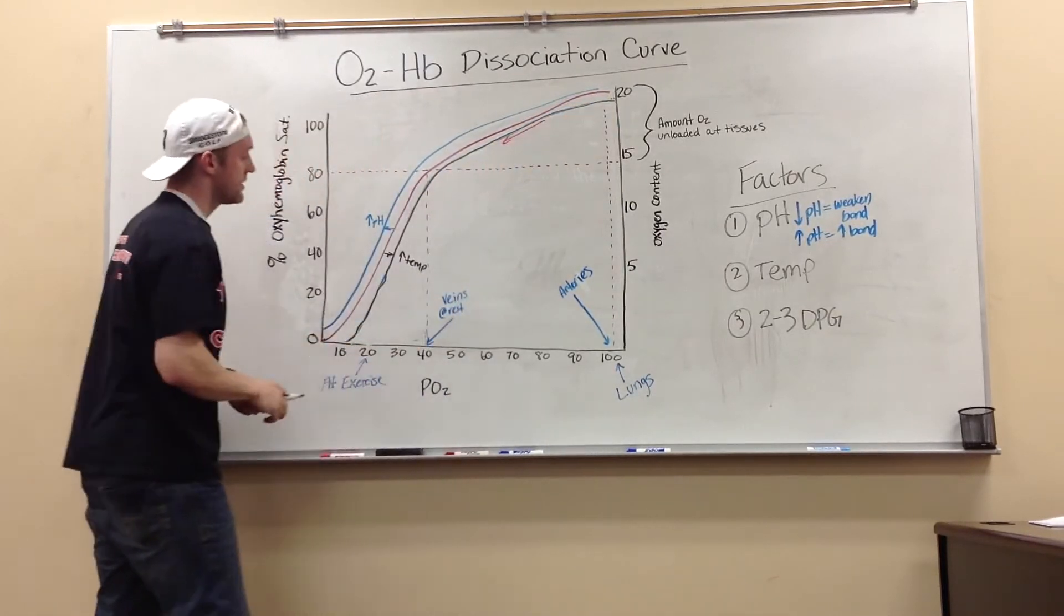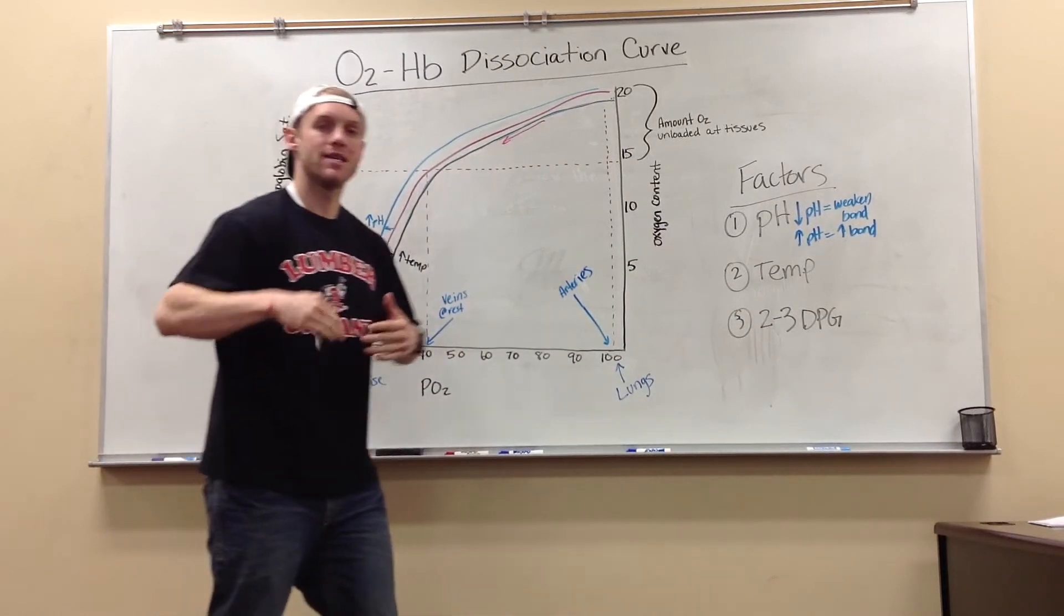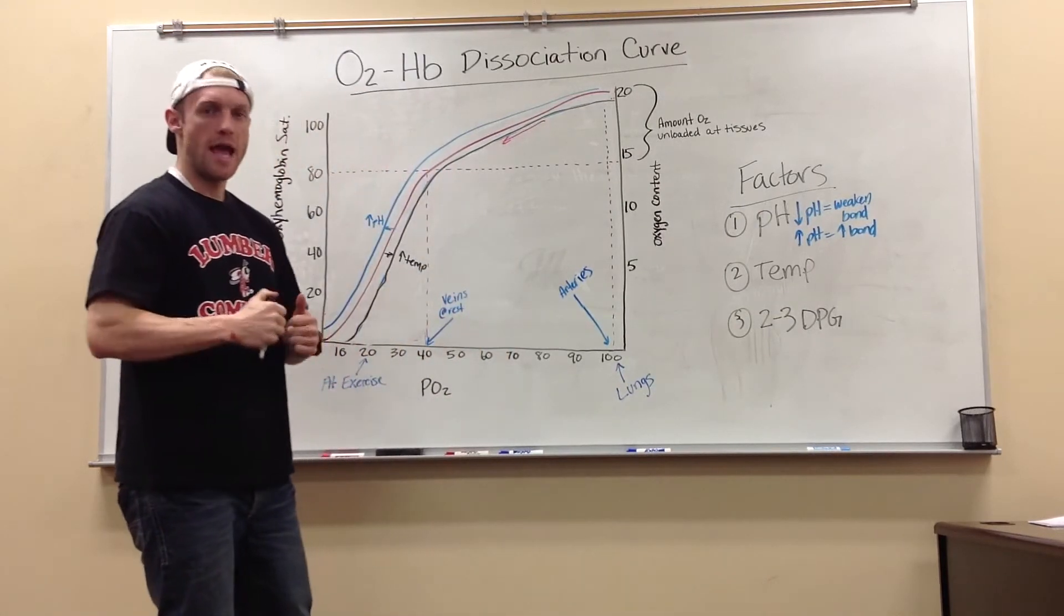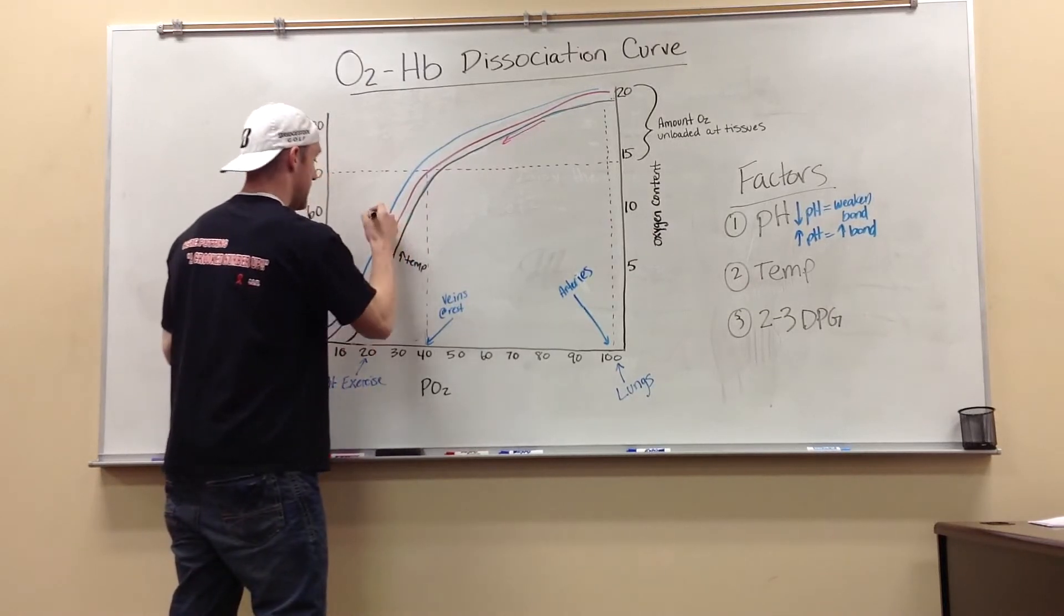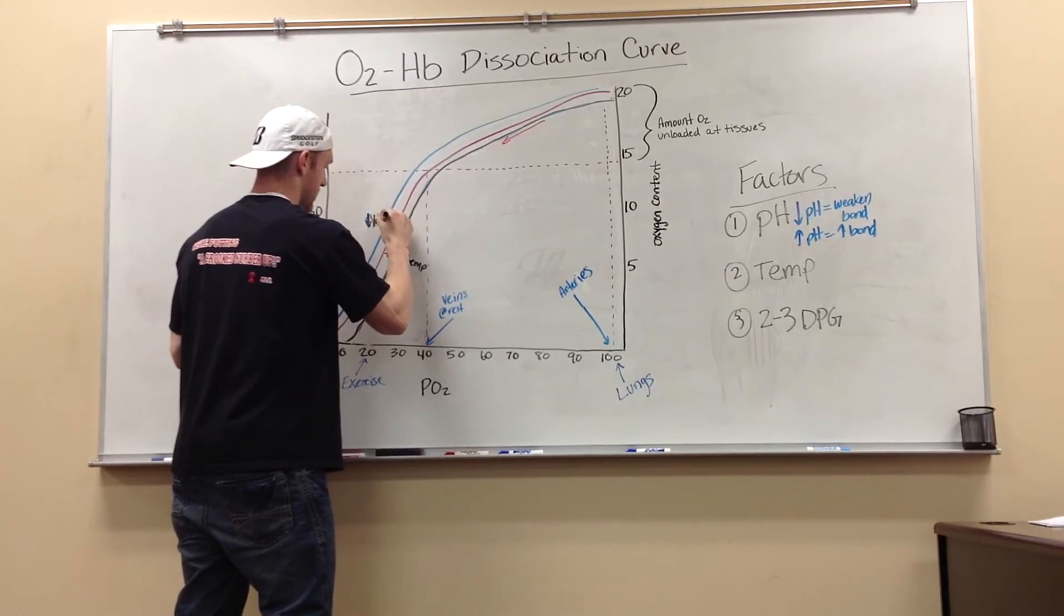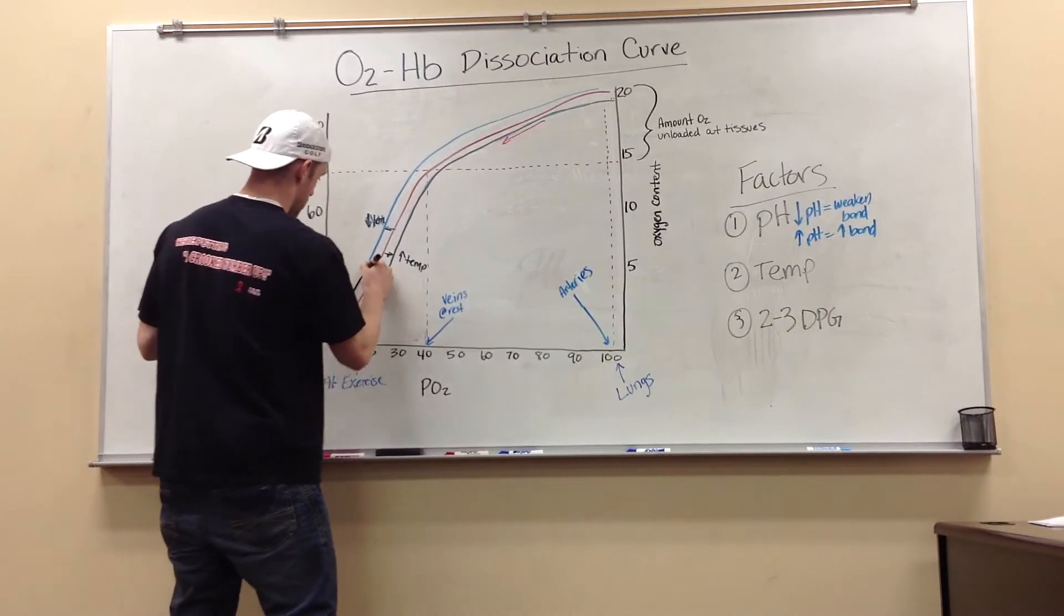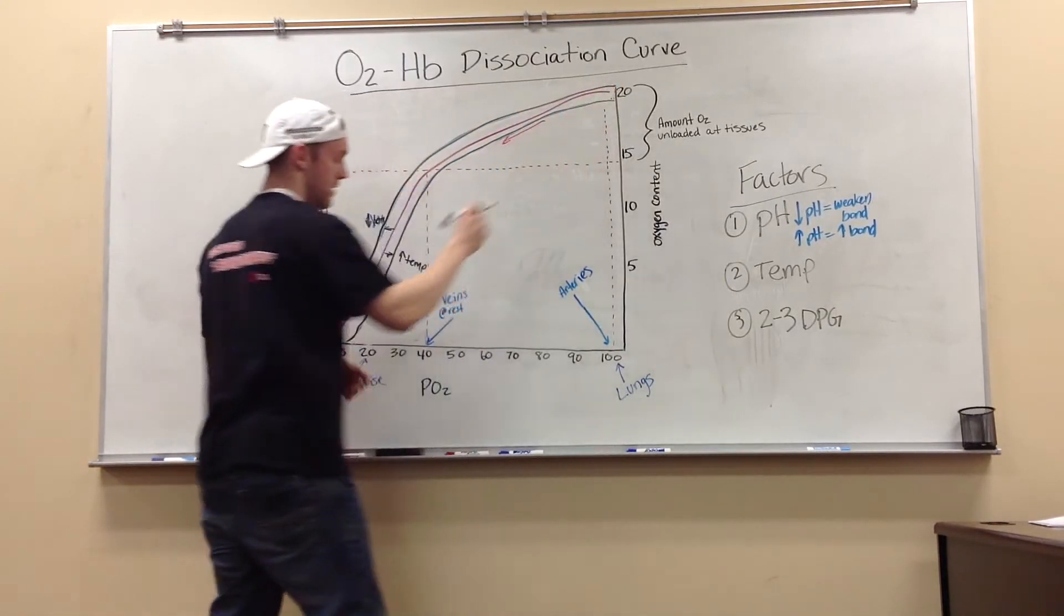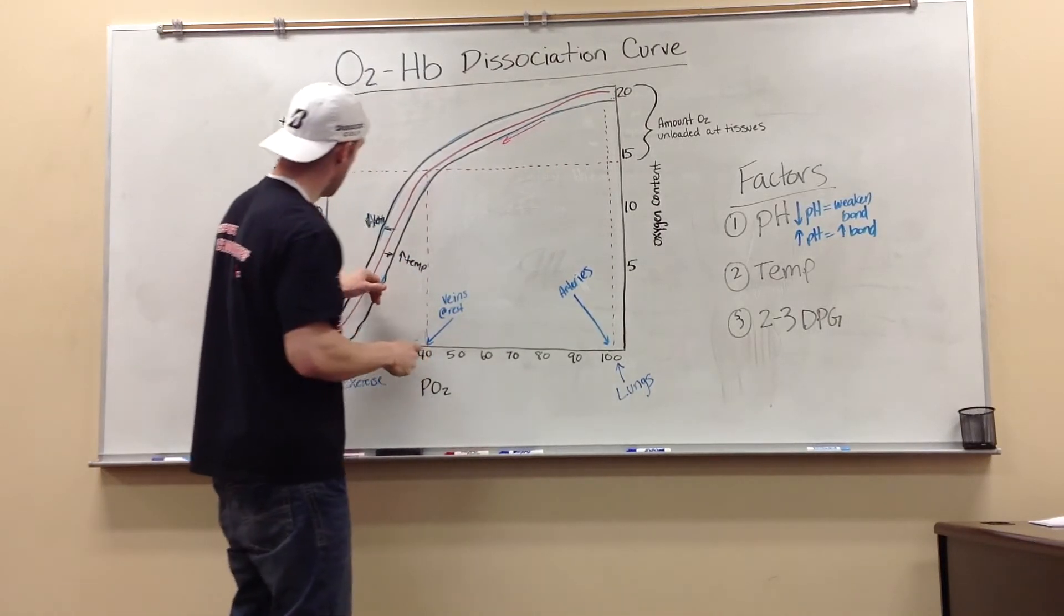Alright? Same concept as it was with pH. It's just the increase in temperature is going to decrease that bond so we can unload the oxygen at the muscles quicker. Now, if I decrease my temperature, it's just going to make that bond stronger and it's going to be harder to unload at the tissues.